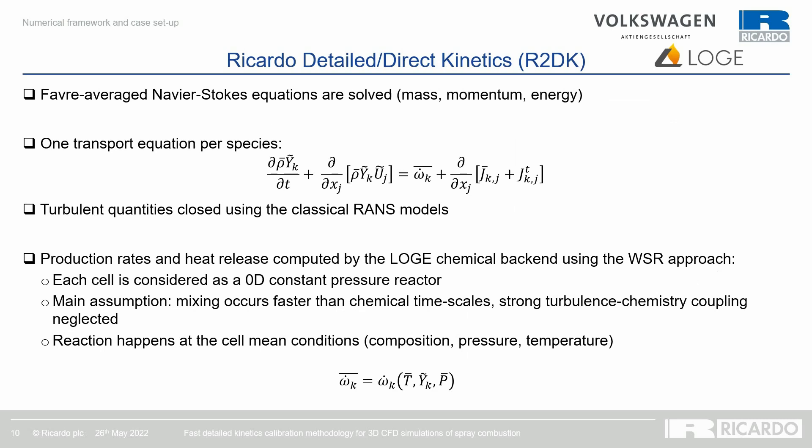Within the Ricardo Direct Detail Kinetics framework, the Favre-averaged Navier-Stokes equations are solved for mass, momentum, energy, and one equation per species tracked. Turbulent quantities are closed using classical RANS models. The production rate and heat release are computed by the Loggi chemical backend using the well-stirred reactor approach. Each cell is treated as a zero-dimensional constant-pressure reactor, where the main assumption is that mixing occurs faster than chemistry, so turbulence-chemistry interaction is neglected and reactions happen at cell-mean conditions of composition, pressure, and temperature.